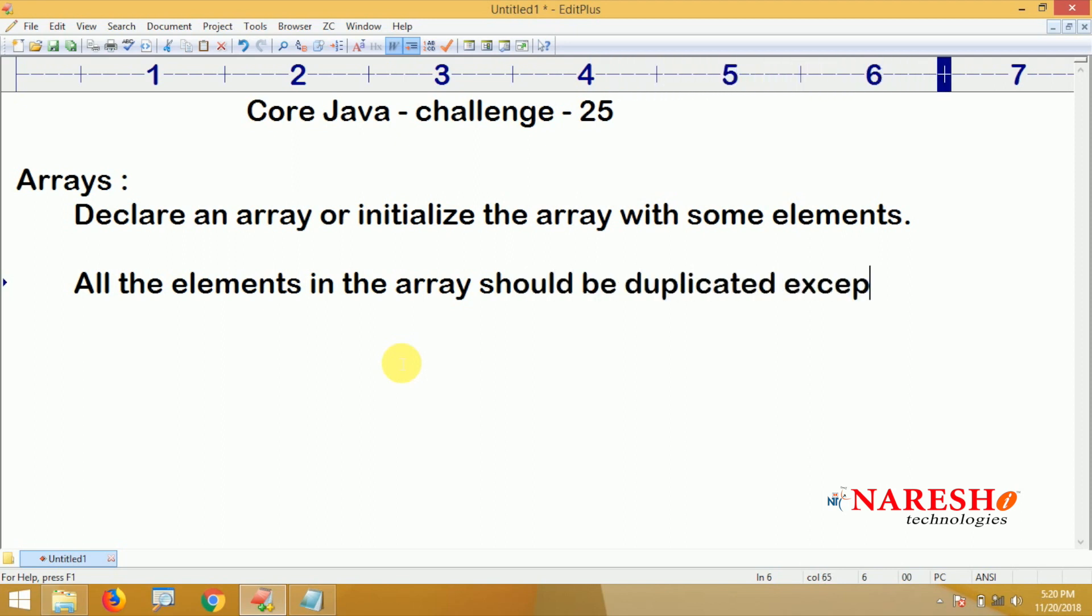One element, like an array like this: 1,1, 2,2, 3, 4,4, 5,5. Here all the elements are duplicated except the element 3.